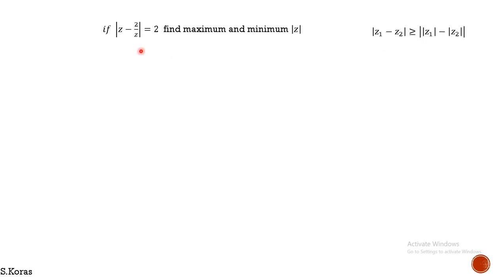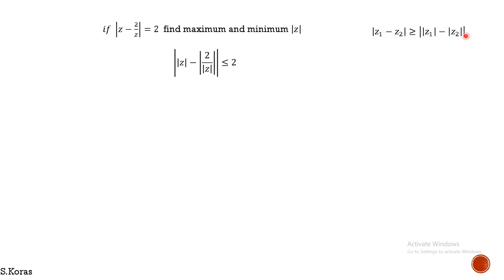We are going to take the absolute value and split this modulus into two moduli. As we know, if we split a single modulus into two moduli in subtraction, surely the split modulus will be lesser.